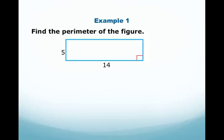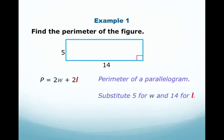Example 1: Find the perimeter of the figure. The figure is a rectangle with a width of 5 and a length of 14. So when we use the formula P equals 2w plus 2l, we plug in 5 for w and 14 for l. And we get 2 times 5 plus 2 times 14.